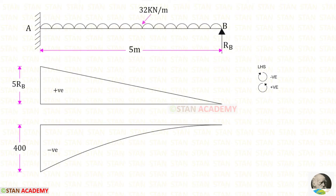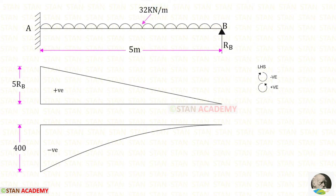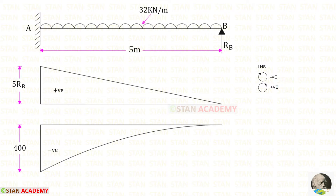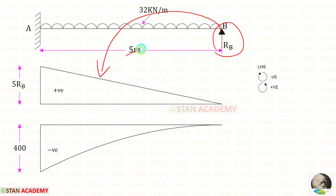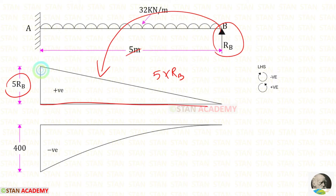Now we have to draw the bending moment diagrams separately — first for Rb, then for the uniformly distributed load of 32 kN/m. We are finding moments about point A, moving towards the left-hand side. Clockwise will be negative and anti-clockwise will be positive. Rb is acting in the anti-clockwise direction, so it is positive. The distance is 5, giving us 5Rb. Since it is positive, the diagram comes above the line.